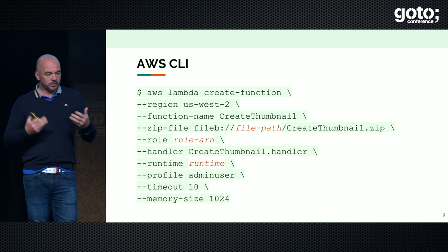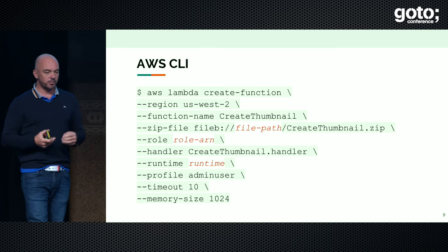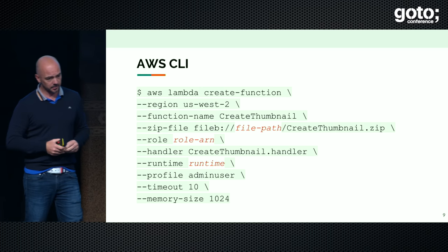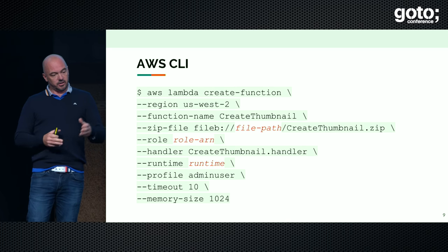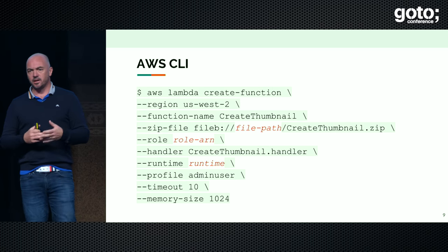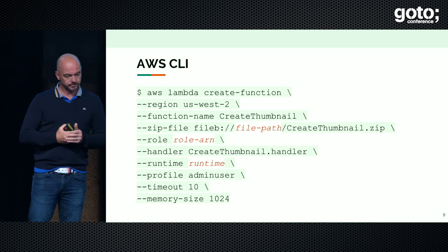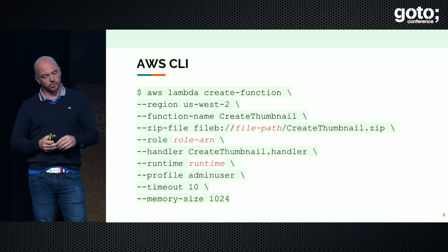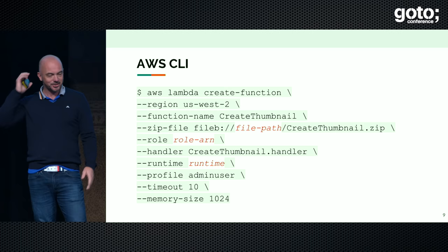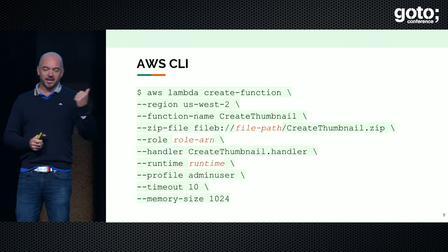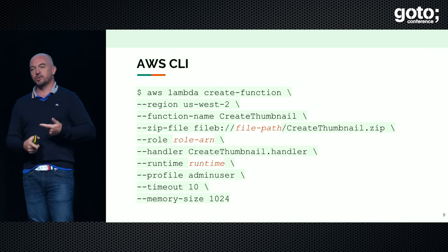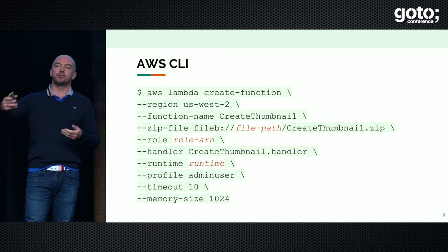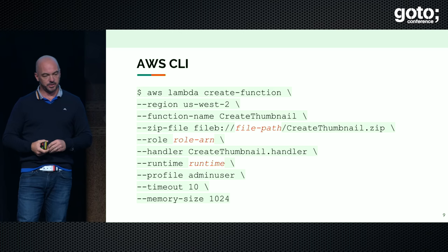What does this new Lambda, this new serverless thing look like? I'm a terminal guy, so the AWS CLI looks like this. Lambda create-function, region, function name, handler, runtime — is it Python, is it Node.js, is it Java. Memory. And then you see something called zip file. That's supposed to be a talk about packaging. The package is a zip file. In that zip file you have the code, you potentially have the dependencies. That zip file gets uploaded to S3, and then under the hood Amazon deploys that app somewhere.